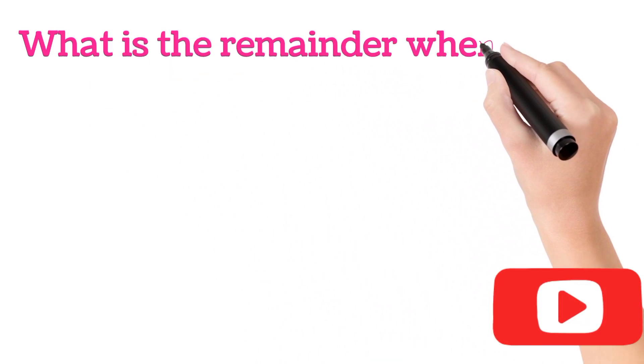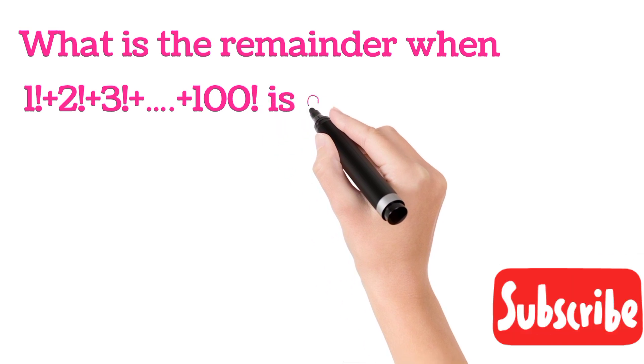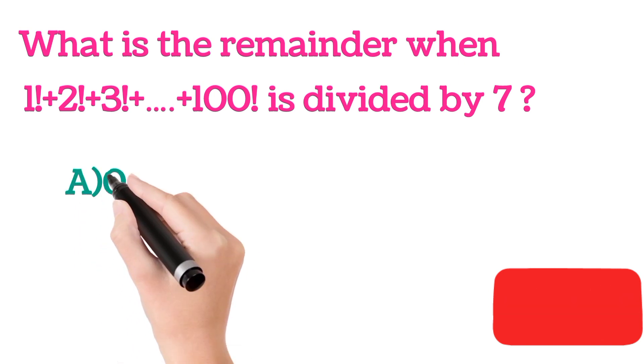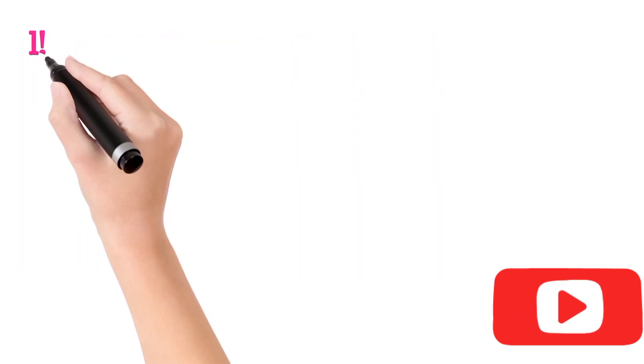What is the remainder when 1 factorial plus 2 factorial plus 3 factorial so on to 100 factorial is divided by 7? The options are A: 0, B: 5, C: 6, and D: 7. Let us see how to solve this question.